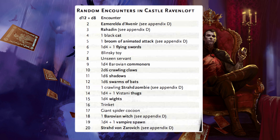Rolling a D12 plus a D8, add them together for the result of the encounter. Possible results include: Ravnovir, Esmeralda de Avnir Raadan, one black cat, one broom of animated attack, 1d4+1 flying swords, a Blinsky toy, an unseen servant, 1d4 Barovian commoners, 2d6 crawling claws, 1d6 shadows, 1d6 swarm of bats, 1 crawling Strahd zombie, 1d4+1 Vistani thugs, 1d4 wights, a trinket, a giant spider cocoon, 1 Barovian witch, 1d4+1 vampire spawn, and Strahd von Zarovich himself.